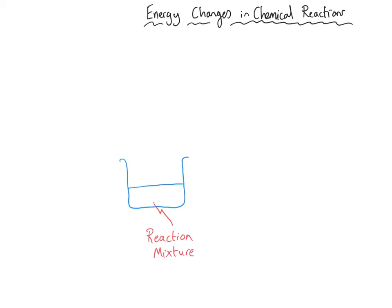Hopefully you've already watched my other video about energy changes in chemical reactions. Just a really quick recap: in any chemical reaction, energy is normally transferred either from the reaction mixture to the surroundings, or the other way around. So here we've got the reaction mixture, and if in this reaction energy is being transferred out to the surroundings, for instance to a thermometer as well that might be in the reaction mixture, but also to the air surrounding the beaker and the chemicals that are inside it.